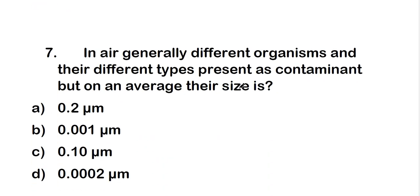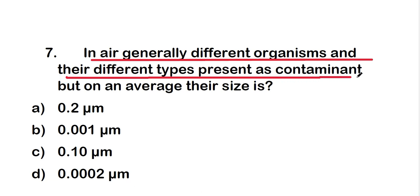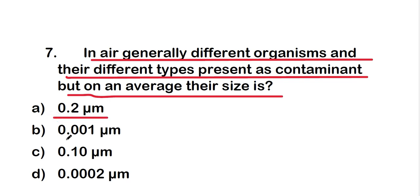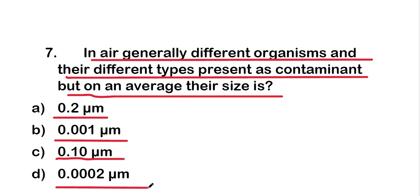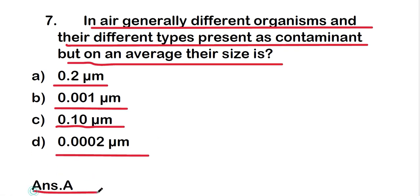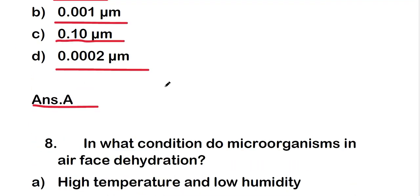Next question: in air, different organisms and their types present as contaminants, but on average their size is — 0.2 micrometer, 0.001 micrometer, 0.10 micrometer, or 0.0002 micrometer? The right answer is option A, that is 0.2 micrometer. On average, their size is 0.2 micrometer.